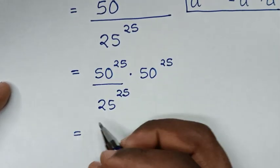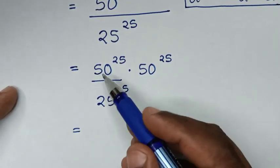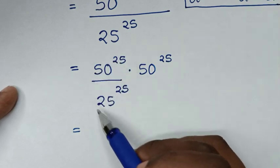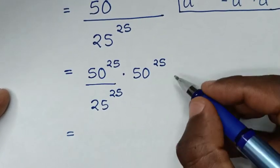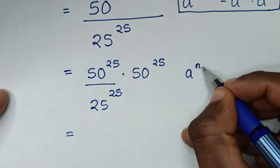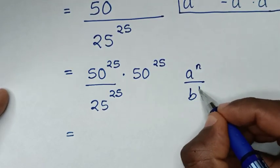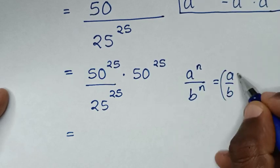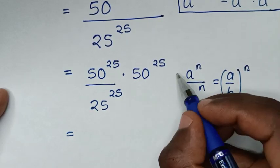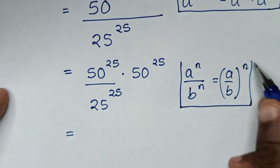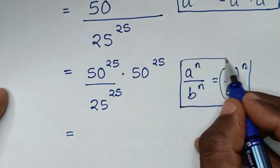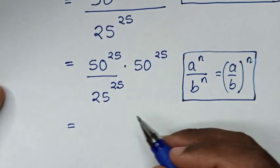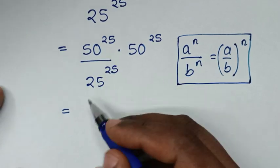Then, from this division of exponents with the same power of 25, this is in the form of a^n over b^n, which is equal to (a/b)^n. So we will apply this form here, giving us 50 over 25, bracket to the power of 25.